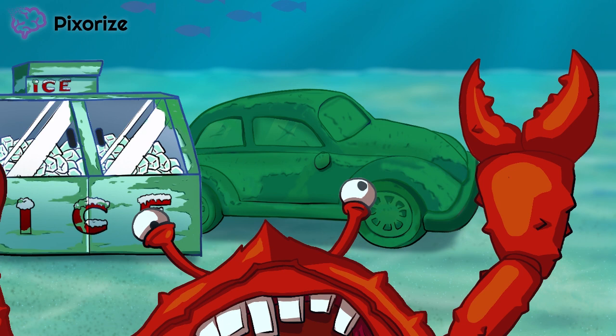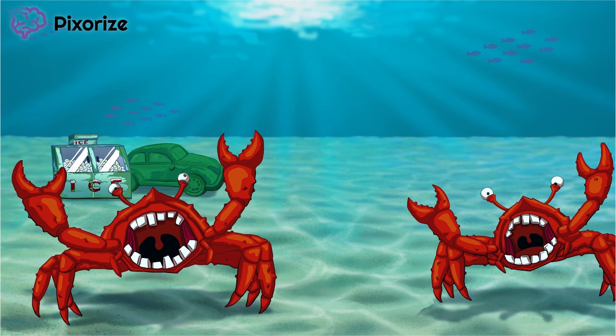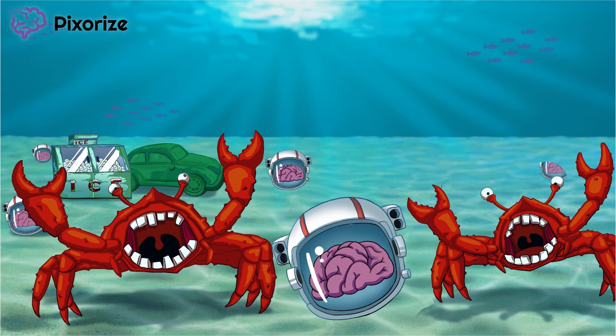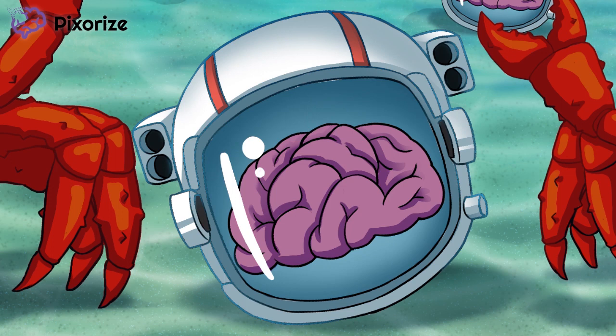Just why are these king crabs going crazy? Well, it's because they found their favorite food — brains. There's just so many of these brains around, but unfortunately these crabs can't get to them, because the brains are stuck inside galactic space helmets. These galactic helmets should help you remember the word "galacto," while the brains inside symbolize the word "cerebroside." Putting this together, these galactic brains represent galactocerebroside. Notice how there is an accumulation of galactocerebroside on the sea floor.